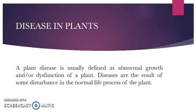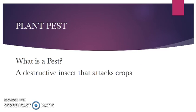Before we go into the actual presentation, we are going to define what a plant disease is. A plant disease is usually defined as abnormal growth and/or dysfunction of a plant. Diseases are the result of some disturbance in the normal life process of the plant. We are also going to look at what a pest is. A pest is a destructive insect that attacks crops.